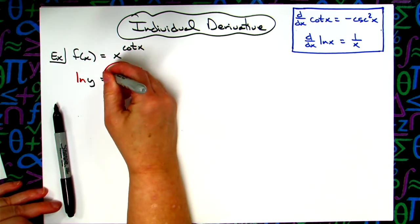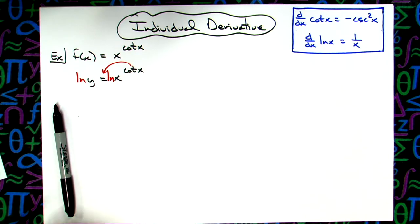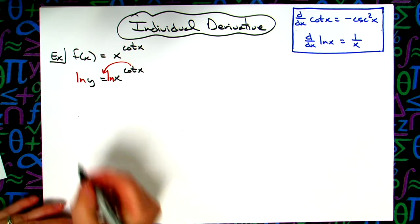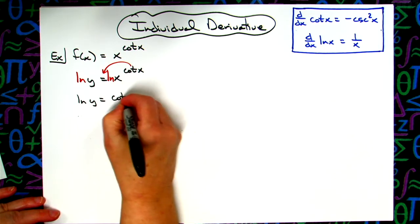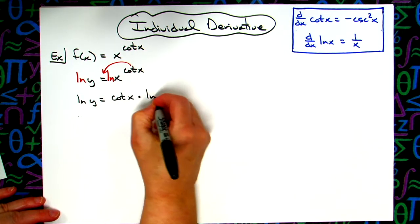We're going to bring that cot x down in front because that's one of our properties of logarithms. So I'm going to have ln(y) = cot(x) · ln(x).